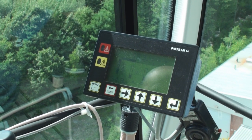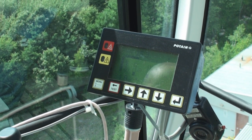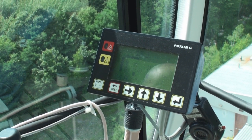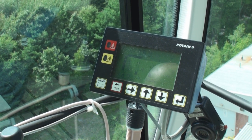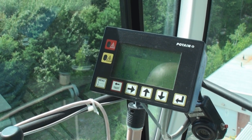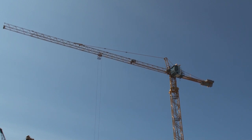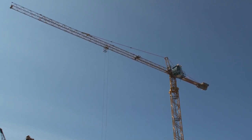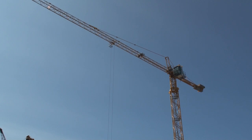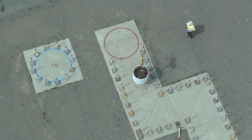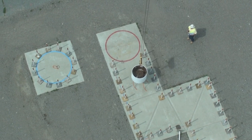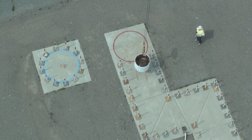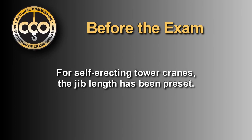If the crane is equipped with an LMI, it has been programmed in accordance with the manufacturer's instructions and is functioning properly. The crane you will operate has been set up and leveled prior to testing. No part of the course has been placed at a radius that exceeds the crane's rated capacity. For self-erecting tower cranes, the jib length has been preset.